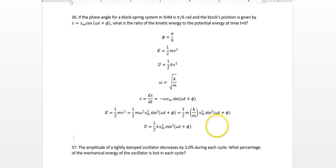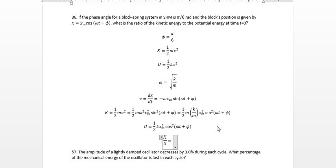We're asked for this at a particular time, so at that time, the omega t is 0, because we're asked for it at time t equals 0. And so this is going to be, and the one-halves are going to cancel out, the k is going to cancel out, xm squared is going to cancel out. So this is just going to end up being sine squared of pi over 6 divided by cosine squared of pi over 6.